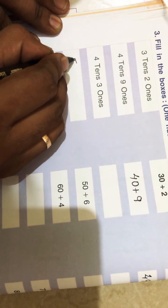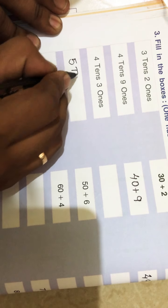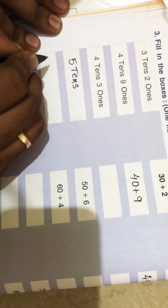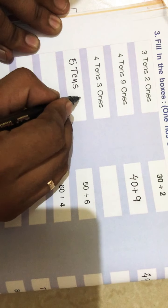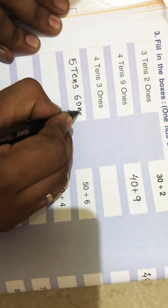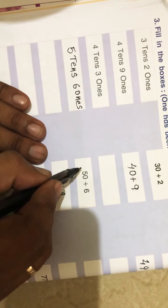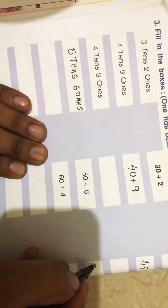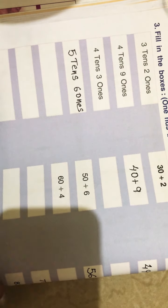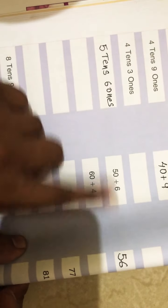Five tens will be 50, and how many ones? Six ones. So write here six ones, and the number which will be formed using 50 plus 6 will be 56. Understood?